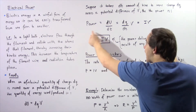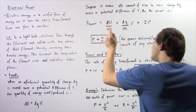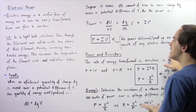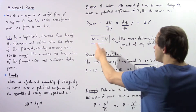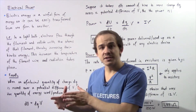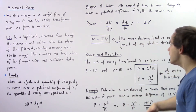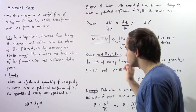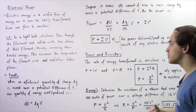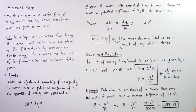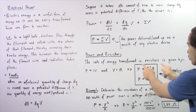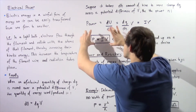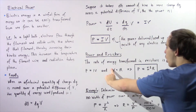So the power output P is equal to the product of the electric current I and the voltage difference V. P equals IV. This is the general equation that gives the power delivered or used by any electric device. Now let's specifically discuss resistors and determine the power that resistors use up. The rate of energy transformed in resistors is given by two equations derived from this general power equation and Ohm's law.